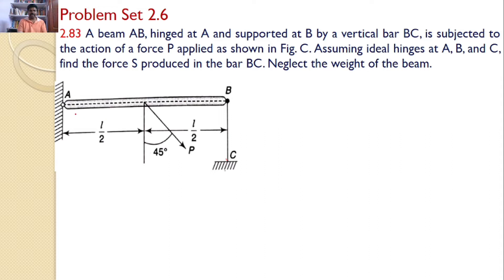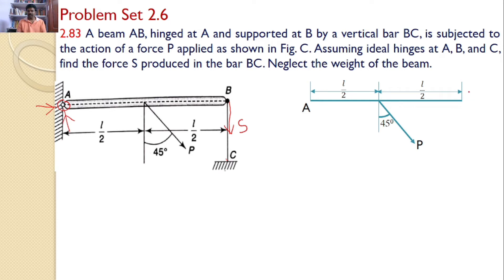Our interest is to find the force developed inside the vertical bar BC. For that, we will draw the free body diagram of the beam AB. The various forces acting on beam AB include the applied force P at 45 degrees. We initially assume a tensile force S acting away from point B, where S is the magnitude of the tensile force.